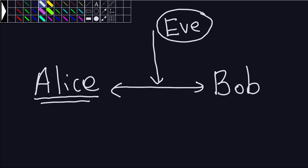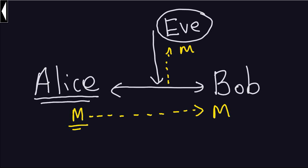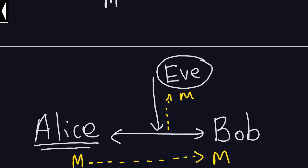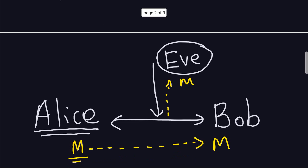Alice already did that transformation — the person who wants to send the message transforms the plain text into the cipher text. Once she gets the cipher text M, she sends it to Bob. Bob receives the cipher text M. Of course, because Eve is also listening to that channel, Eve is also going to get that cipher text M. Now M is P-H-H-W-F-D-U-O-R-V, and once Eve gets that message, she's not going to understand what it says.